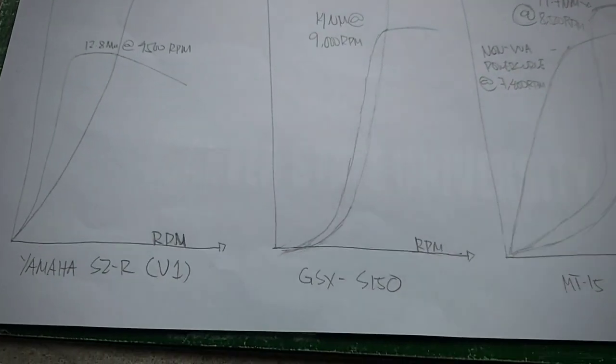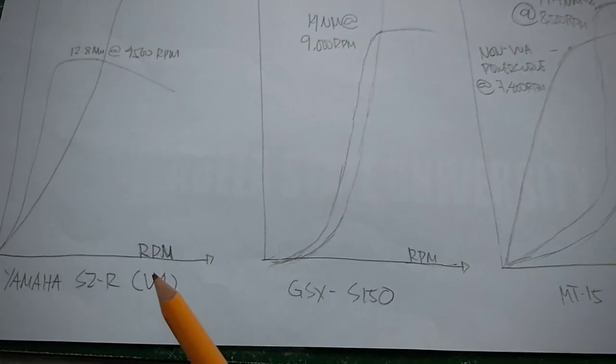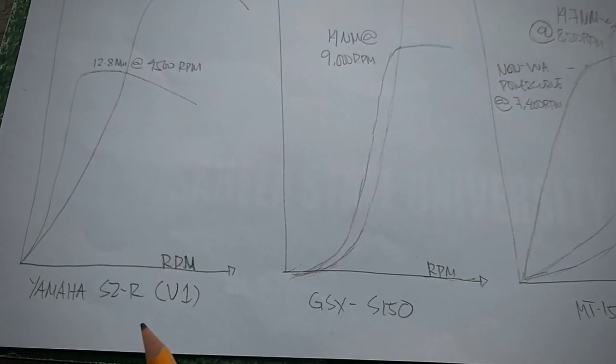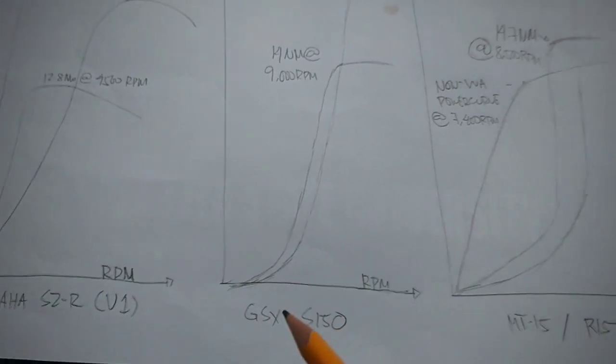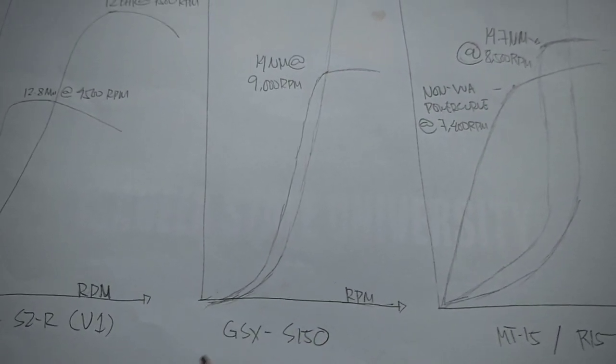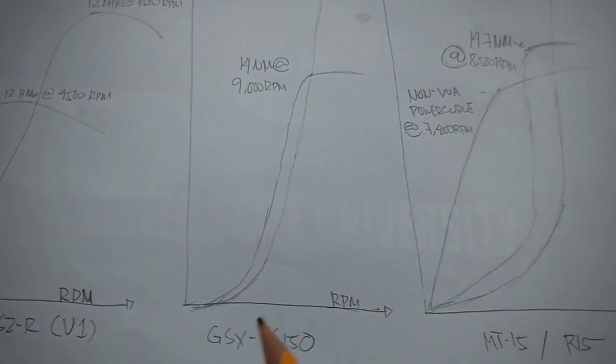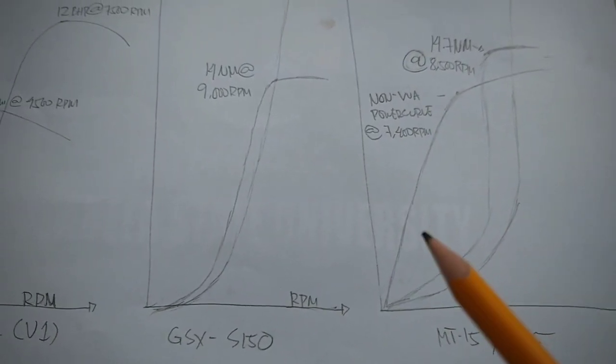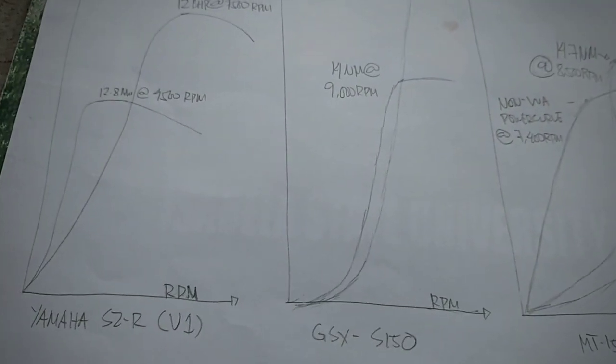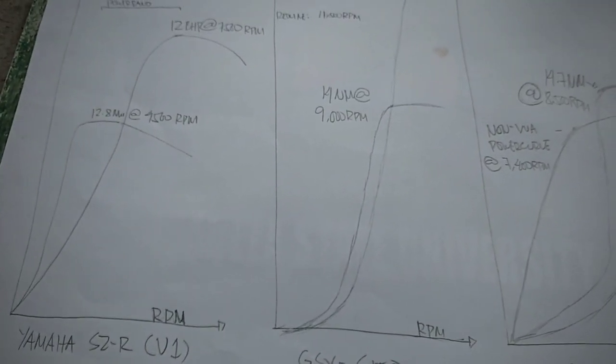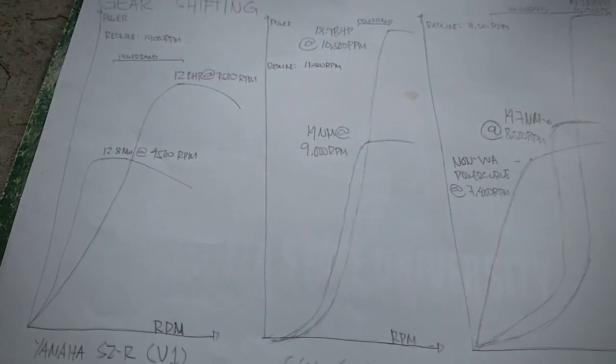Engineering wise, kapag low revving ang motor mo, kagaya ng Yamaha SZ which I have, physically sila yung long stroke na mga motor. And then yung mga high revving na motor, kagaya ng GSX, sila yung mga short stroke, big bore na motor. Of course, VVA bike, may VVA sila, kaya iba yung power delivery. So aside dun sa bore and stroke, of course, mayroon din tayong mga power curves which define the low revving and high revving bikes.